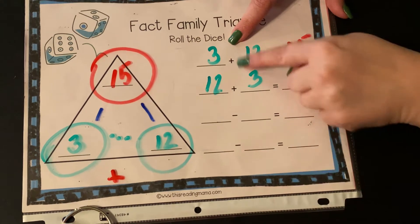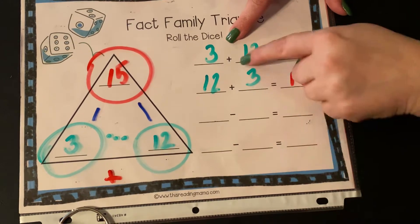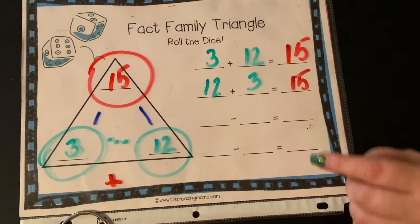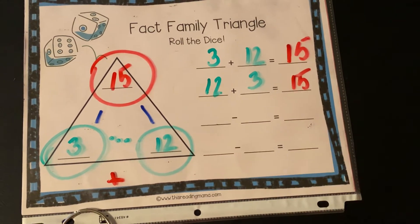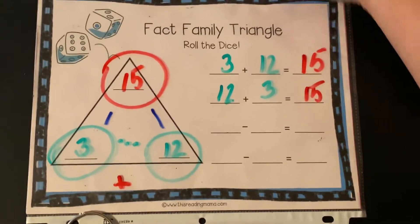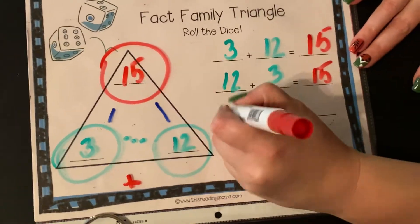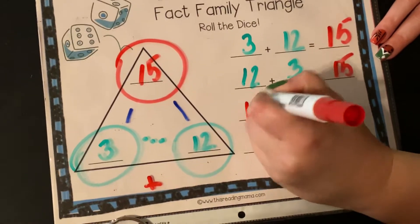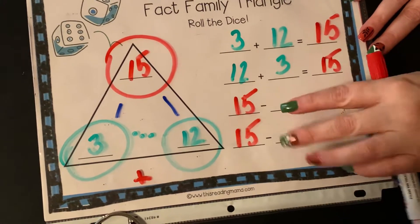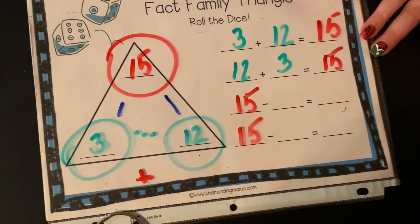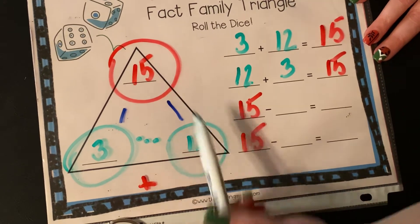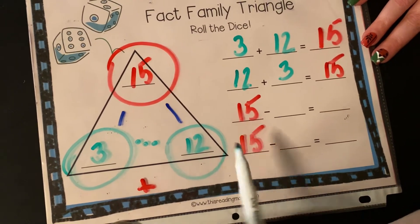Where I'm going to find out if my number is correct is when I come down here to my subtraction options. When I look at subtraction I'm taking these three numbers and making sure they fit. So instead of just reading the triangle we're going to actually do the work. My largest number — my whole — is again 15. And since I'm doing subtraction I know that has to go at the beginning. Now I'm going to do 15 minus 12.